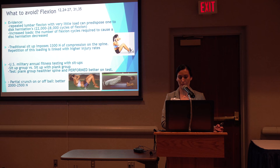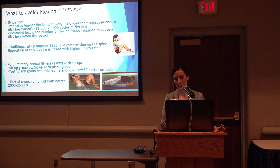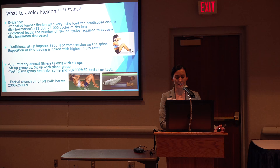Before exercise selection — what should we avoid? Repetitive flexion with very little load can predispose one to disc herniations, with increased loads reducing the number of flexion cycles required to sustain a herniation. Therefore, traditional sit-ups, which impose high compressive loads on the spine, are avoided and replaced by a partial crunch with about 3 degrees of flexion versus 30, or better yet a prone plank, which targets more core muscles and demonstrates similar abdominal and increased oblique EMG. Soldiers who trained for the traditional sit-up test by implementing planks not only performed better on the traditional test but had healthier spines.